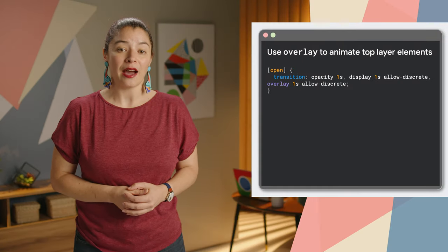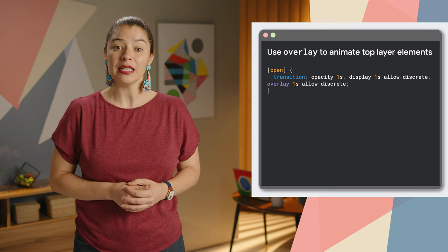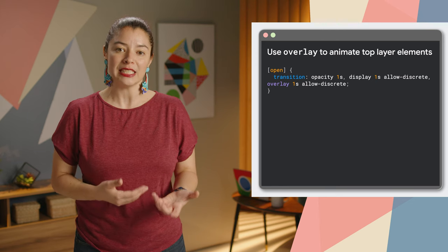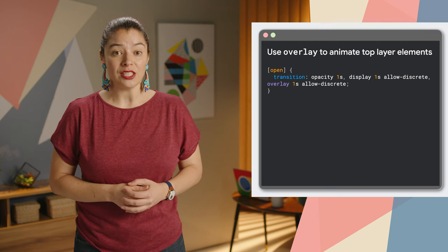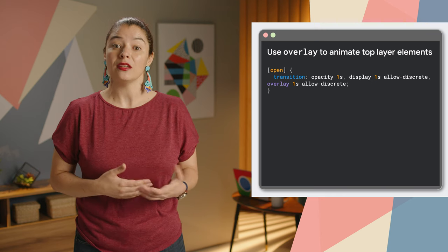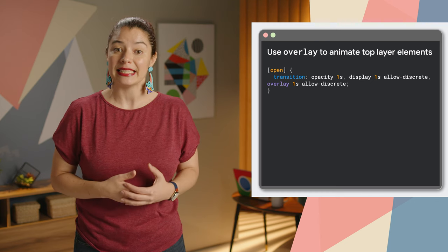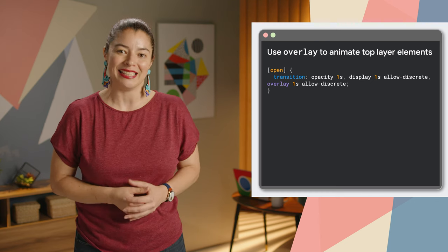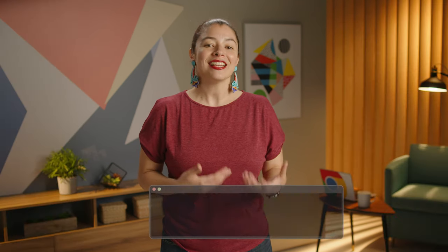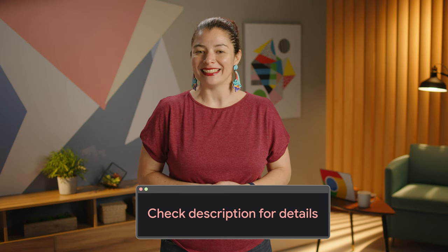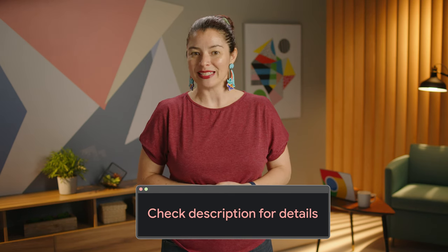Finally, to fade out a popover or dialog from the top layer, add the overlay property to your list of transitions. Include overlay in the transition or animation to animate overlay along with the rest of the features and ensure it stays in the top layer when animating. This will look much smoother. Check out the link in the description for more details to use these features for improving your user experience with motion.